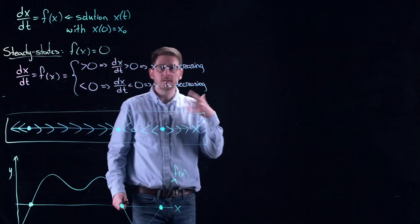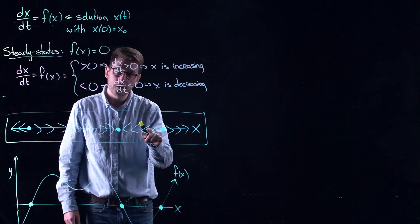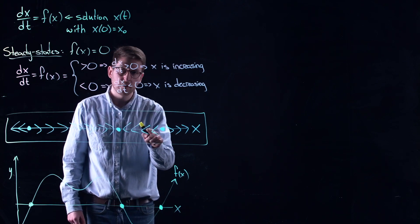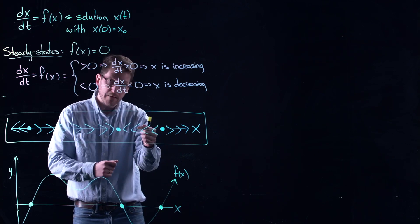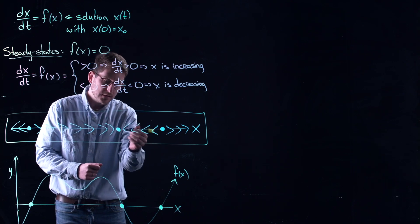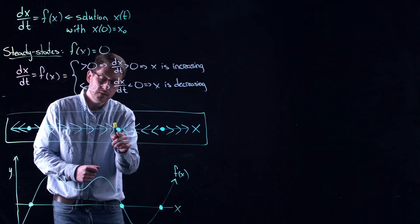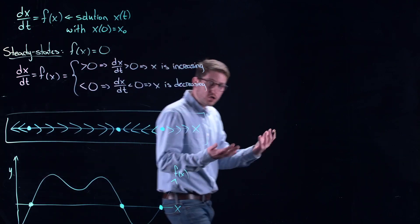What happens if I start in between? Imagine I've got a point right here. That's where I started at x0. What do I do? Well, I go with the flow. The flow tells me I'm going left, and I'm going left, and I'm going left. And I keep going until as t goes to infinity, I hit this equilibrium. I'm converging.